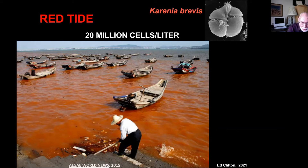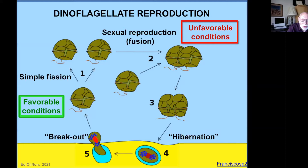Like the diatoms, dinoflagellates have ways of dealing with unfavorable conditions. Under favorable conditions it's just simple fission. But if conditions get unfavorable, they go into sexual reproduction — a fusion that produces an organism that can go into the sediment and hibernate for a long time until conditions are good, then break out and join the water column and start the process all over again. The full life cycle diagram of a single dinoflagellate is extraordinarily complex.